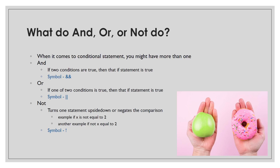So what are the symbols for AND, OR, and NOT? The symbol for AND is two ampersands — you can type it by pressing Shift+7 twice. The symbol for OR is two parallel lines, typed by pressing Shift and the backslash key, which is above the Enter key. The symbol for NOT is the exclamation point, which is Shift+1 on your keyboard.